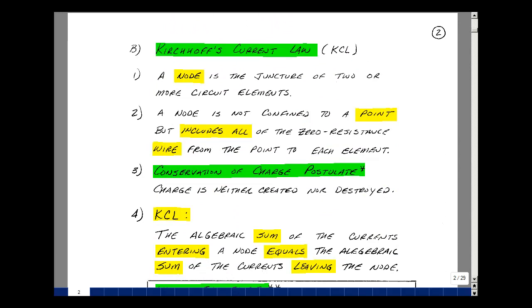We'll next take a look at what's called Kirchhoff's current law, or just KCL for short. Before I do that, I need to define two more things. The first one is a node, and it's a juncture of two or more circuit elements. You can think of a lamp as a circuit element.